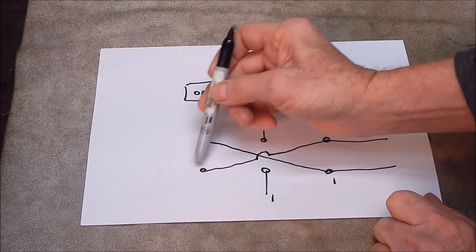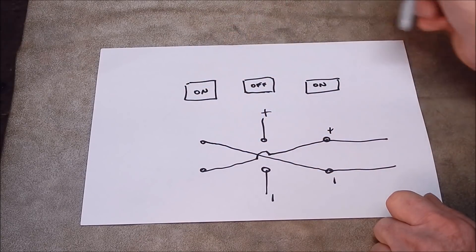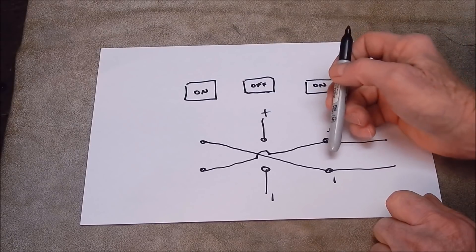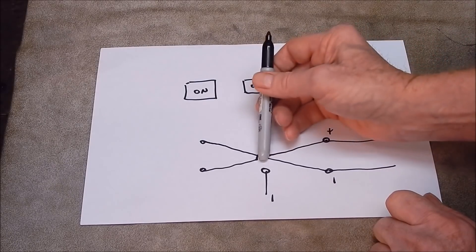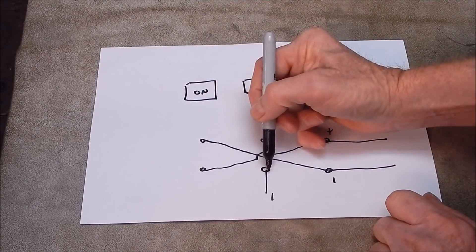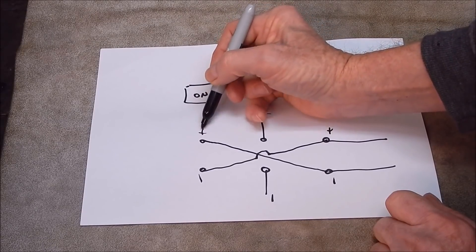The current can flow back this way, but it can't go anywhere because these two terminals are still isolated. So no effect, the motor's running in one direction. Now we reverse the scenario. We throw the switch back this way. Remember, this is negative, that becomes negative. This is positive, that becomes positive.